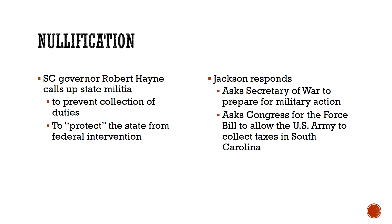Andrew Jackson, of course, is angry — he is furious. He sees this as not only dangerous in a constitutional sense, that South Carolina is challenging the national government, but also personally offensive. So he calls up the Secretary of War to prepare the U.S. Army for military action. Andrew Jackson is about to send the U.S. Army to South Carolina, and the governor is preparing the militia to defend the state. We're almost on the verge of an armed conflict between the United States government and a state.